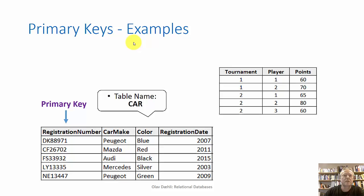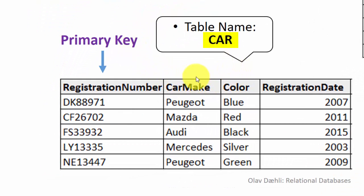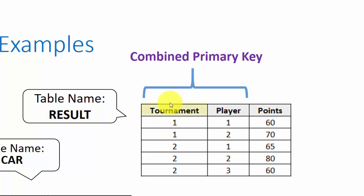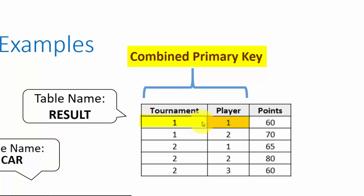Looking at a table named car, all cars have a unique registration number, so the registration number can be used as a primary key to uniquely identify each row. In another table for registering tournament data, the tournament column alone cannot be a primary key because it contains repetitive values. But the combination of tournament and player will always be unique, and therefore it can be used as a combined primary key.